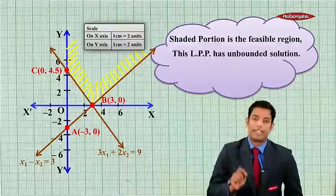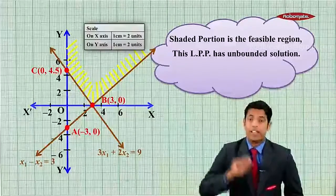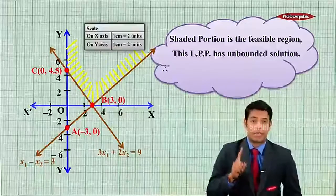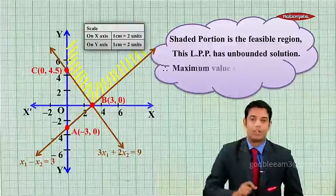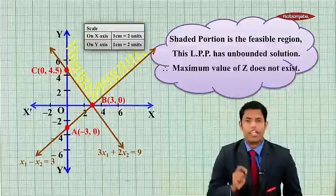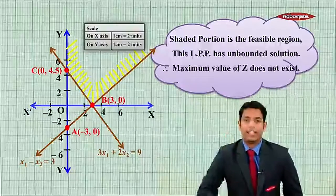So therefore we call that LPP has unbounded solution. Remember, this is a maximization problem, therefore it has unbounded solution. Therefore maximum value of z we cannot find because it goes on increasing, increasing, increasing and increasing.